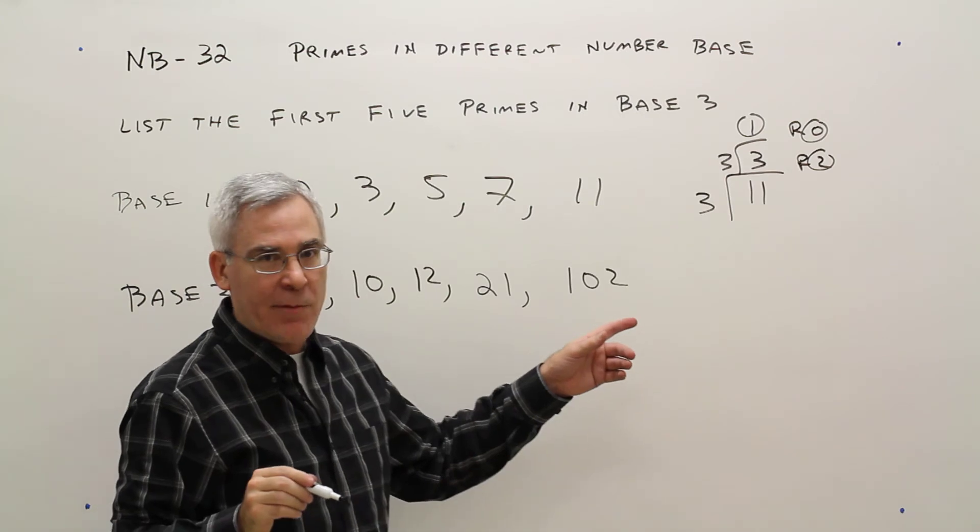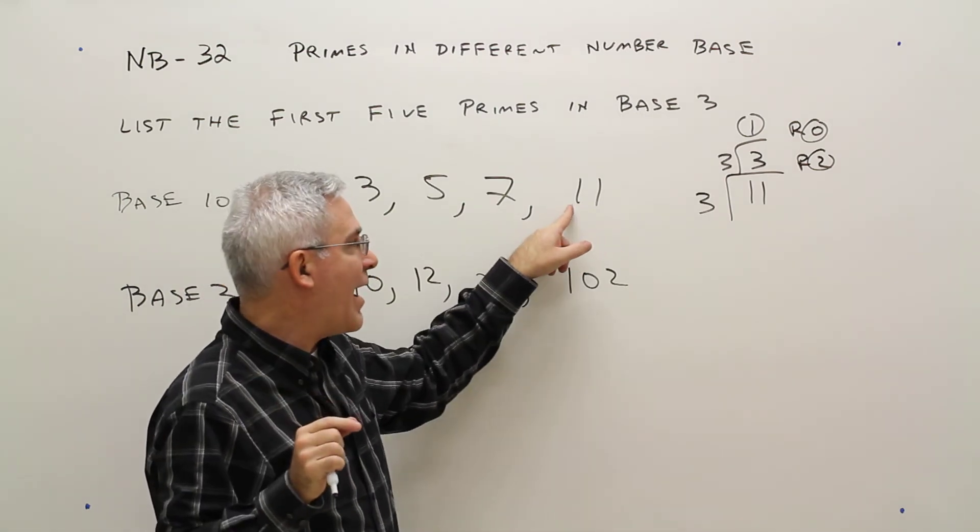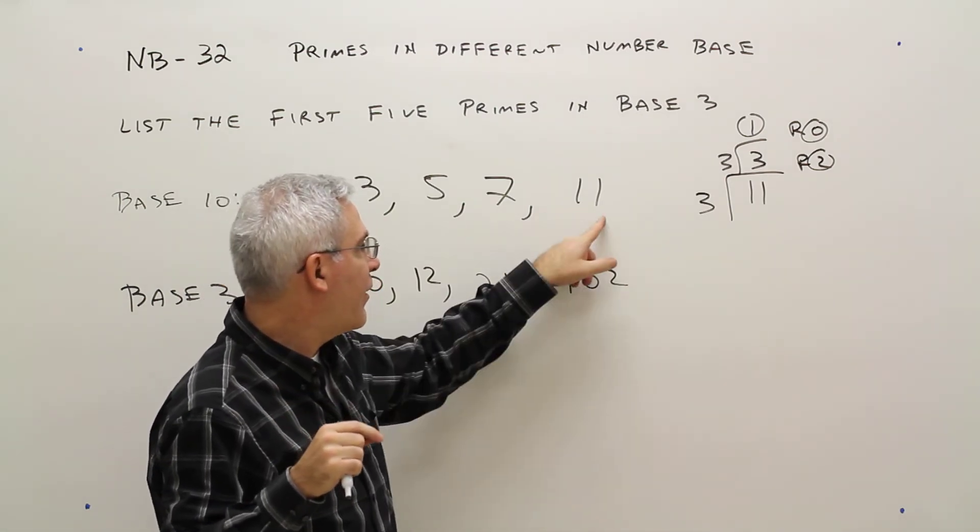Another way of thinking about that is, there's 1 nine, 3 squared, and then 2 left over.